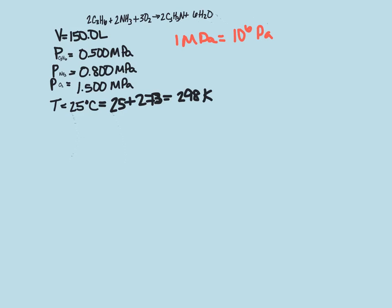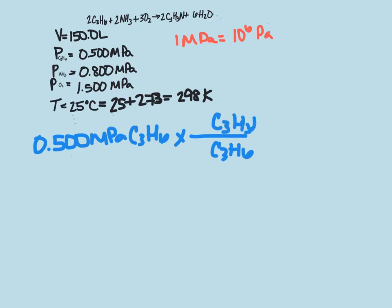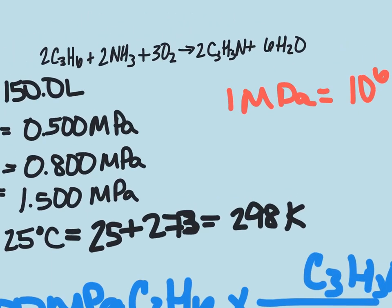Using our balanced equation, we can look at each one of them. So if we have 0.500 megapascals of C3H6, we're going to multiply that by the molar ratio of C3H6 to our C3H3N.